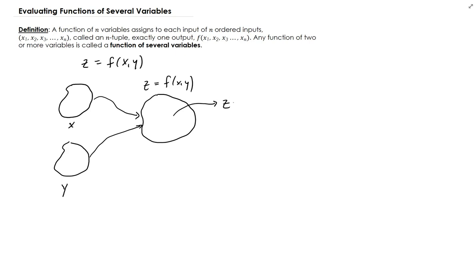So if you have two inputs, like the one you see here, that's going to be a function of two variables. If you have three inputs, that's going to be a function of three variables, and so on. So let's look at an example of this.